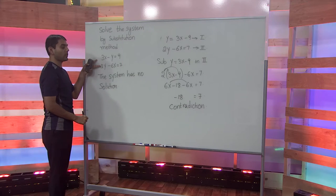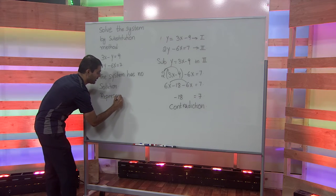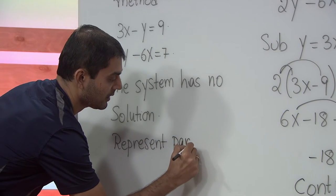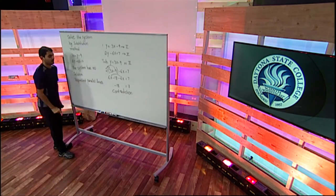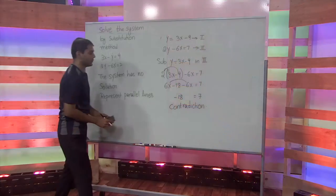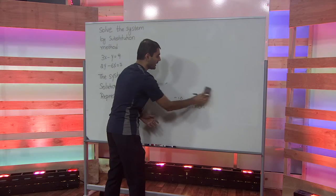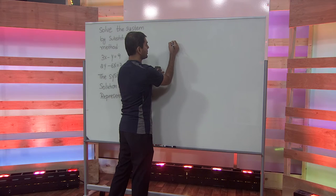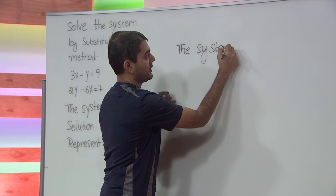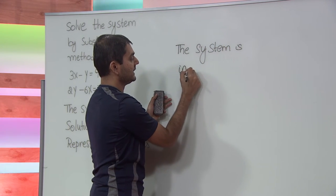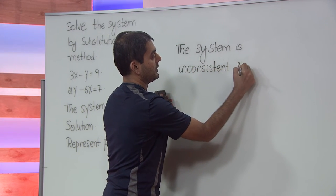These two equations represent parallel lines. The system is said to be inconsistent and independent. When the system has no solution, the system is referred to as inconsistent and independent.